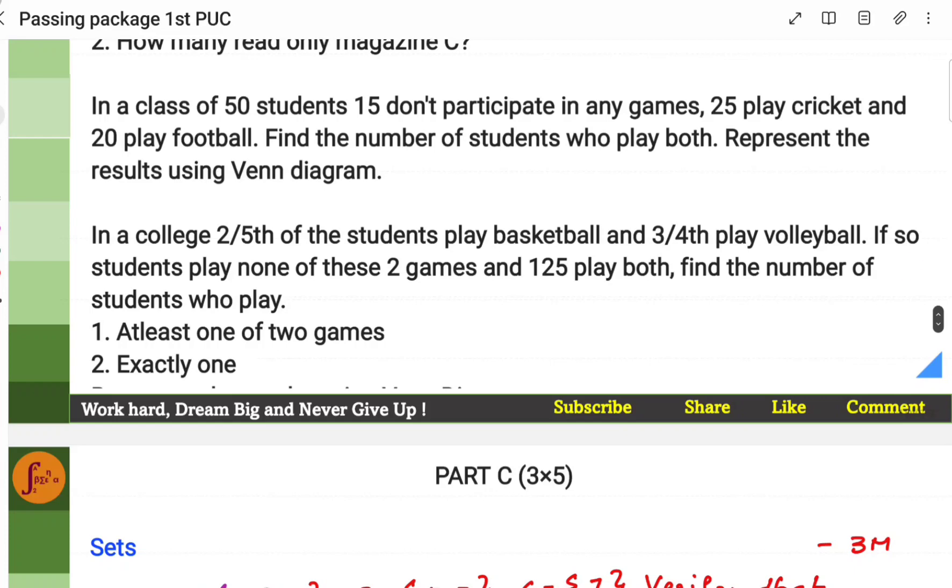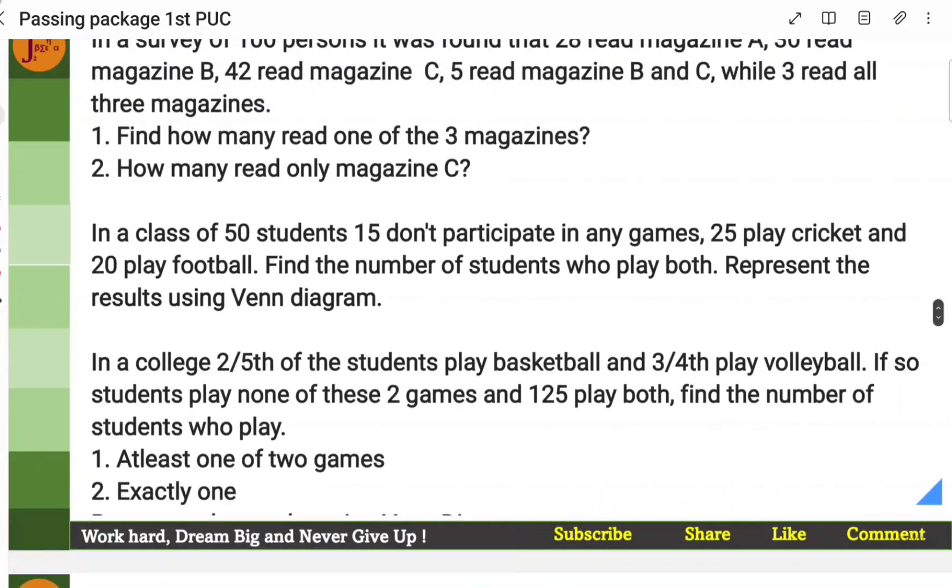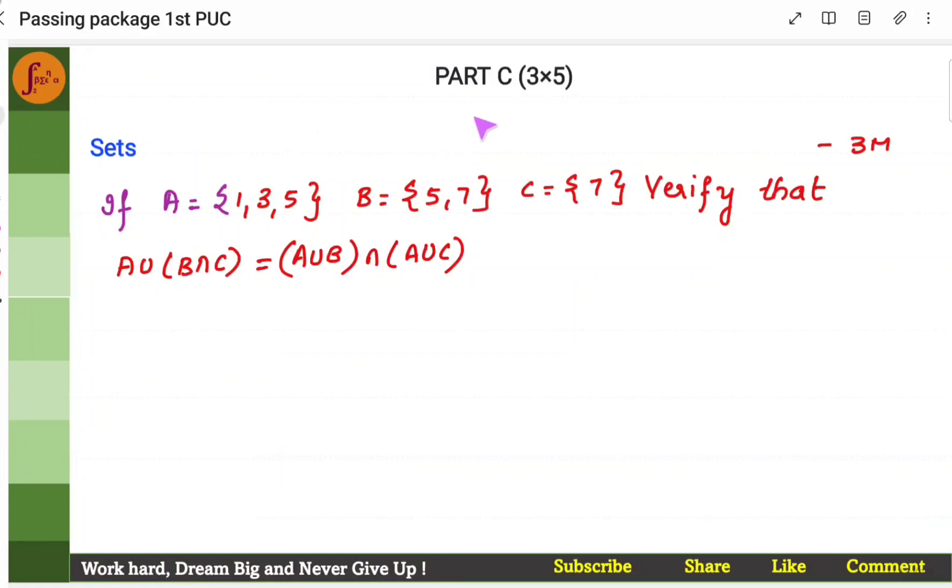Similarly, here, basketball and volleyball. So, these kind of problems you'll have to solve using intersection and union concepts. Again, from sets in part C, we'll get a three marker where sets are given. We'll have to prove such kind of statements. So, you take this left-hand side, find the set, take right-hand side, find the set, ensure that sets obtained from left-hand side is same as sets obtained in the right-hand side. So, such kind of problems we should be able to solve.